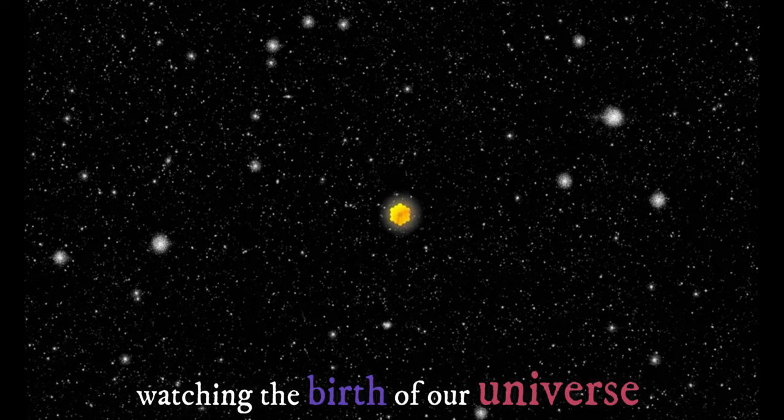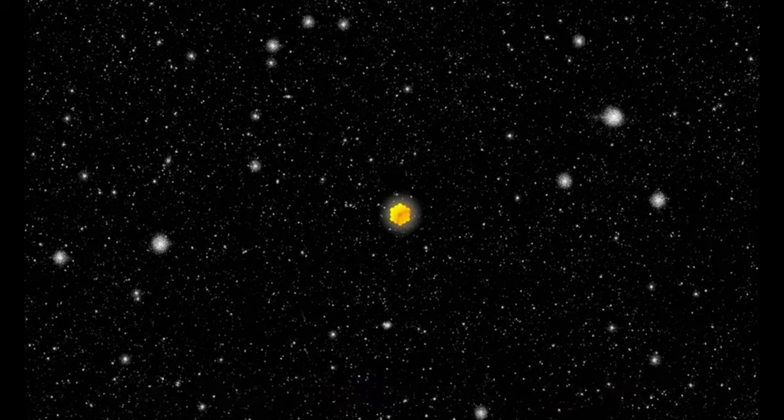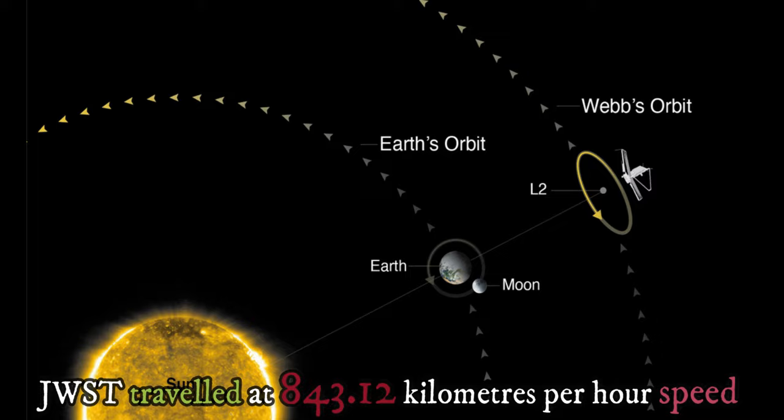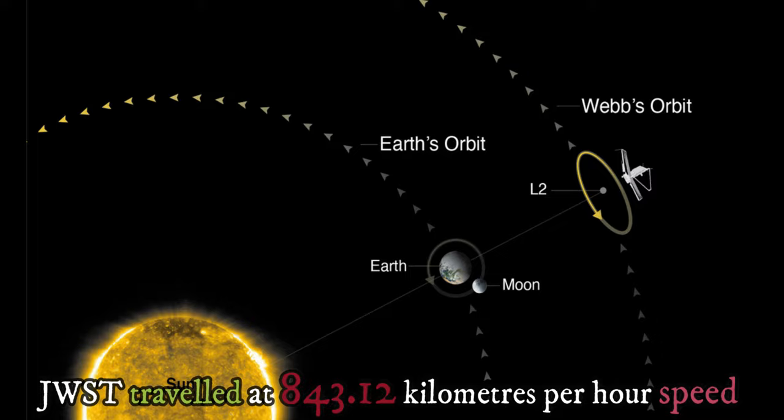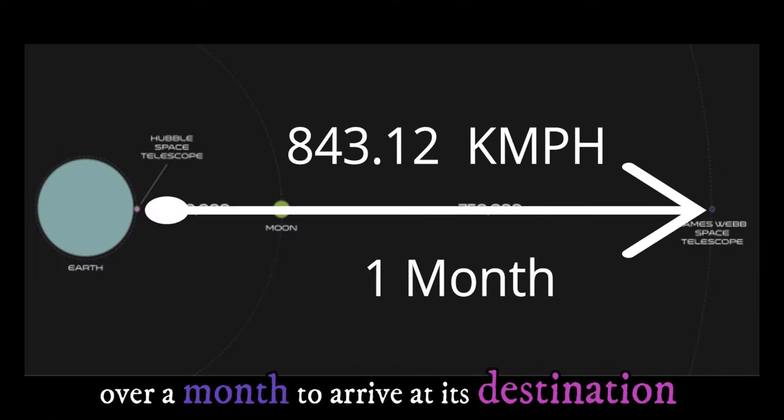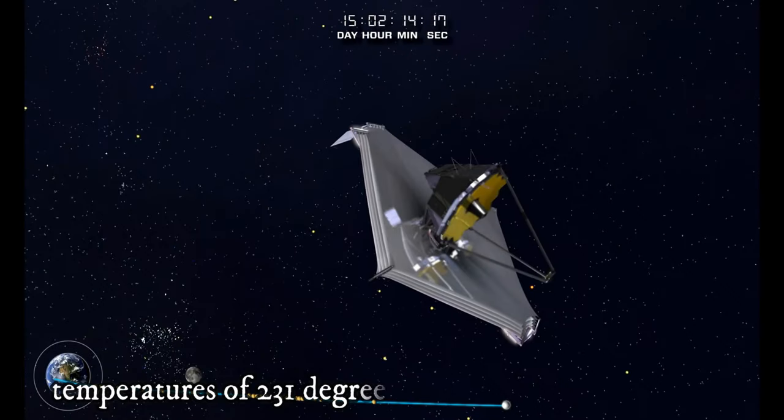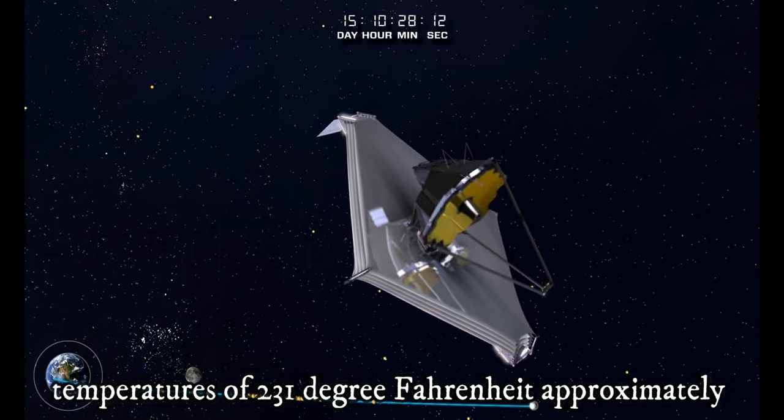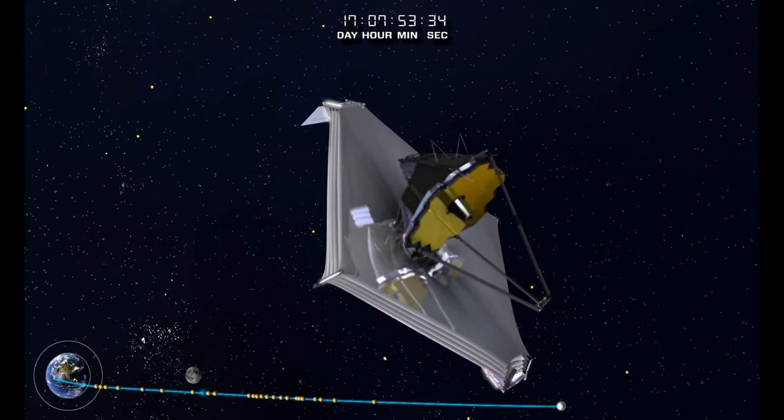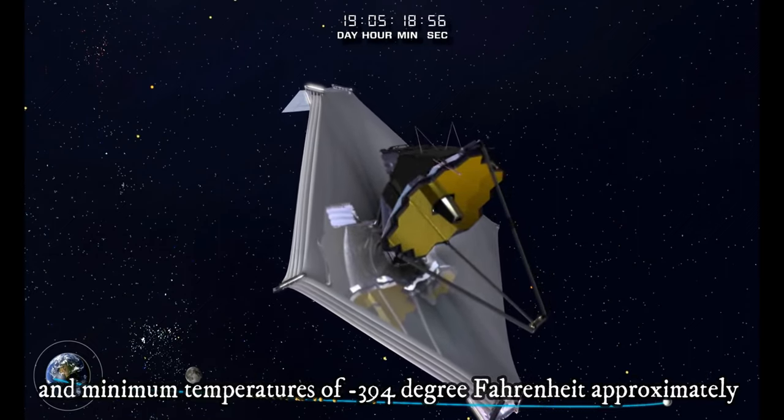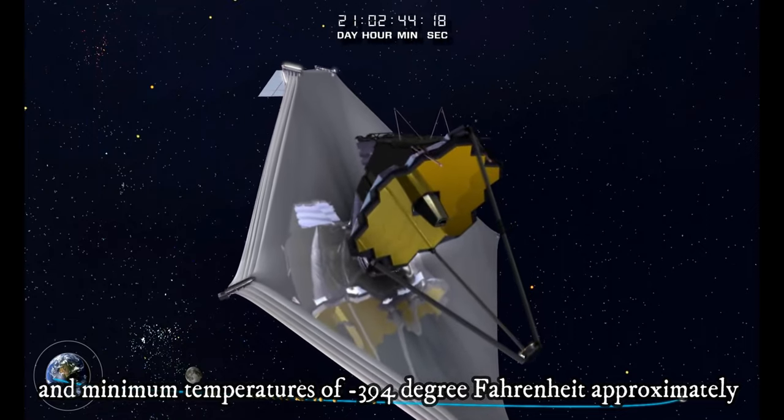Watching the birth of our universe, JWST traveled at 843.12 kilometers per hour speed over a month to arrive at its destination. The first layer of the sun shield can handle maximum temperatures of 231 degree Fahrenheit approximately and minimum temperatures of minus 394 degree Fahrenheit approximately.